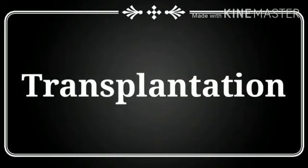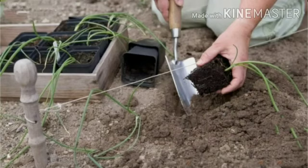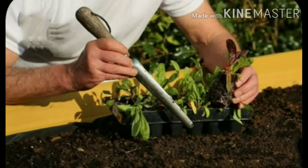Transplantation: In certain plants like paddy, brinjal, onion, and tomato, seeds are first sown in a nursery to get seedlings. Then these seedlings are transferred to the main field for further growth. This is known as transplantation.